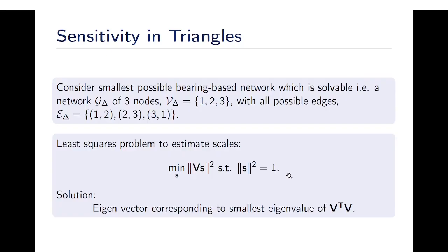This can now be formalized with this formulation where we consider the smallest possible bearing based network. It consists of 3 nodes and all 3 possible edges. The least squares problem to estimate the scales is given like this, whose solution is the eigenvector corresponding to the smallest eigenvalue of V transpose V, where V consists of columns stacked with directions.